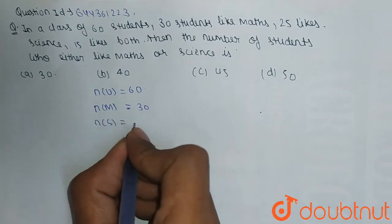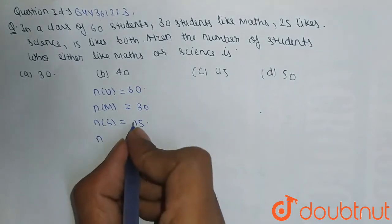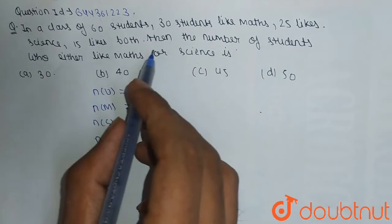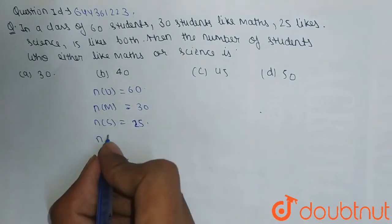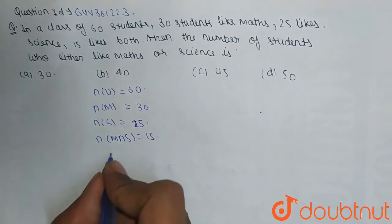And there are 15 students which like both, means n(M∩S) is equal to 15. And we have to find n(M∪S) is equal to question mark.